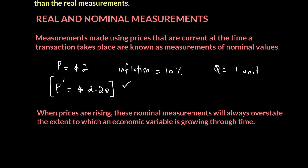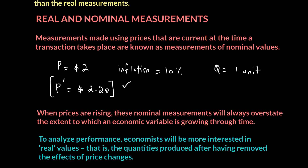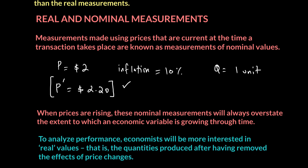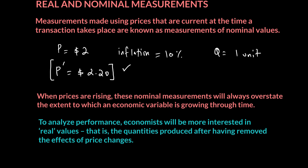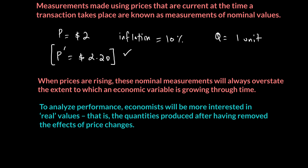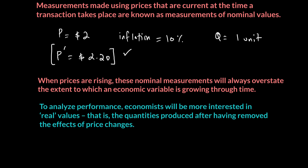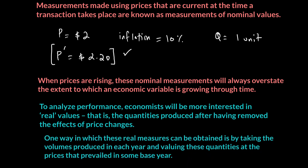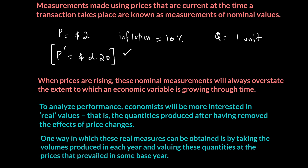Nominal measures can be misleading, and as a result, economists are more interested in knowing the real values of goods and services rather than nominal values, which change simply because prices are changing. One way to do this is to look at the volume produced each year and value those quantities at what we call a base price.